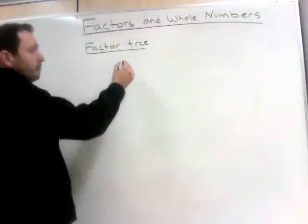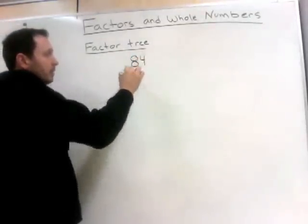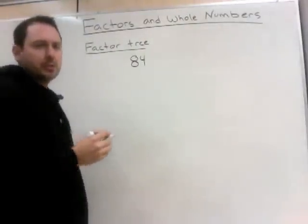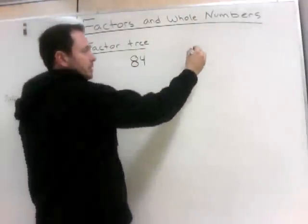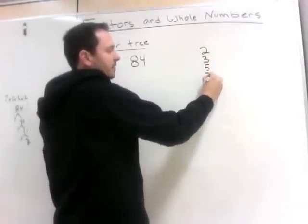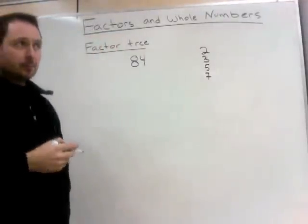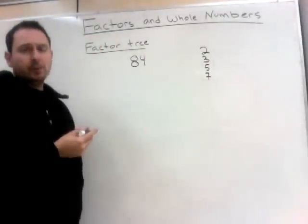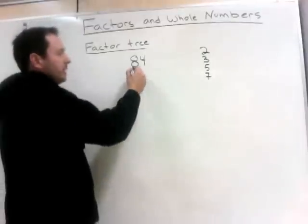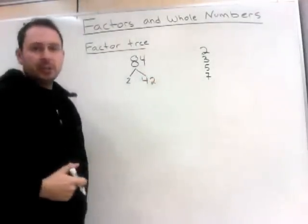Let's start with the number 84 again. The way a factor tree works is we're looking to divide by the smallest prime numbers first. So I'm going to start looking to see if it's divisible by 2, then 3, then 5, then 7, and so on. We know 84 is divisible by 2 because it's an even number. So 84 is 2 times 42.